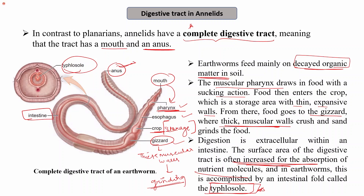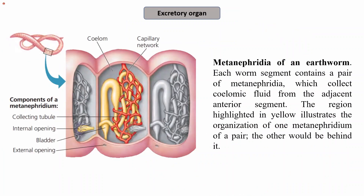Annelids feed on decayed organic matter present in the soil, helping to maintain the nutrient content of the soil by producing humus. They belong to the category of protostomes, meaning the mouth develops first and then the anus.